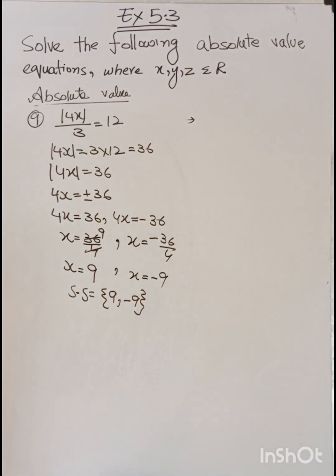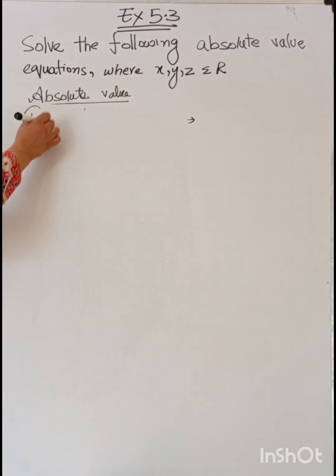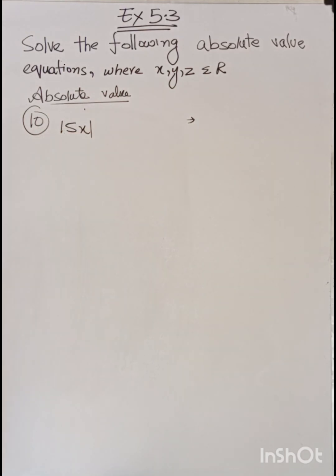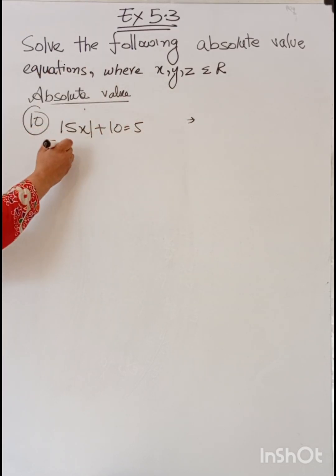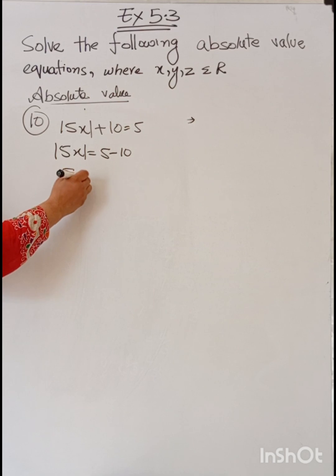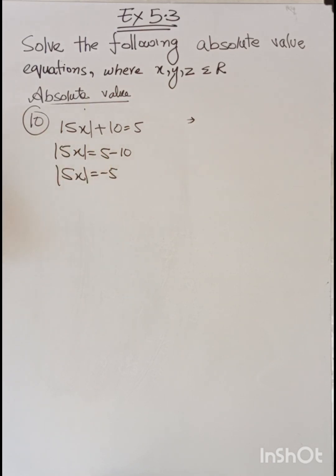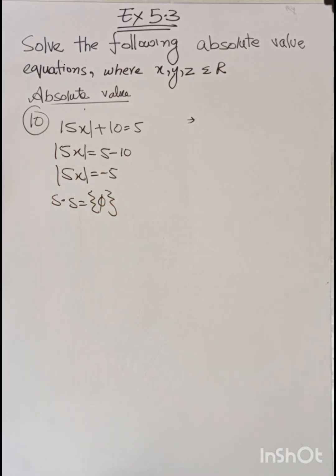Question number 10: absolute value of 5x + 10 = 5. Isolate the absolute value by moving 10 to the other side: |5x| = 5 - 10 = -5. Since the absolute value equals a negative number, we cannot solve this question. The solution set is empty.